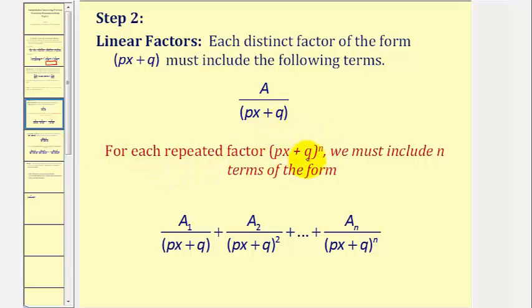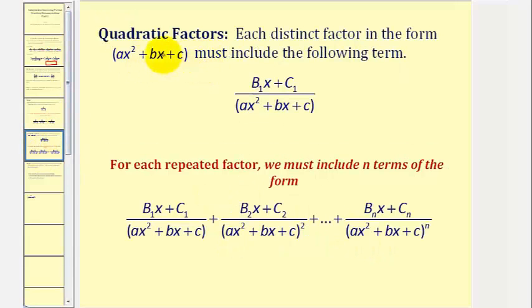For repeated linear factors, if we have n repeated linear factors, we must include n terms, where each fraction picks up one additional repeated linear factor until we have all n. For quadratic factors, we include fractions where the numerator consists of a linear expression and the denominator is the quadratic factor. For repeated quadratic factors, we continue adding terms until we have all n repeated quadratic factors.